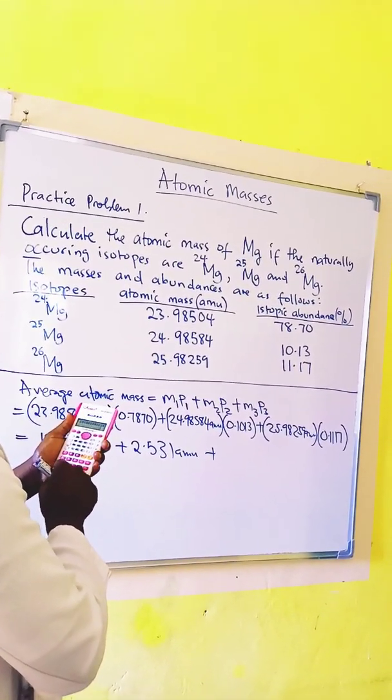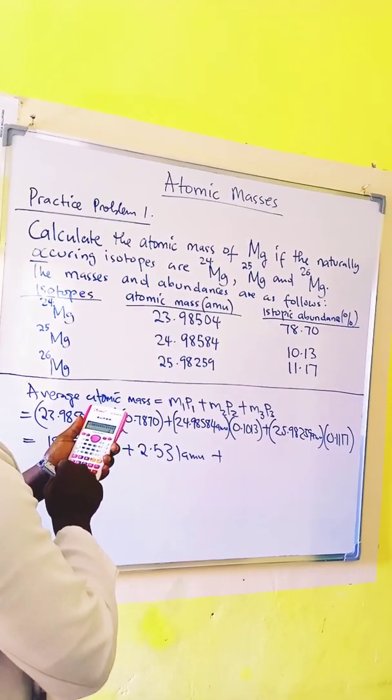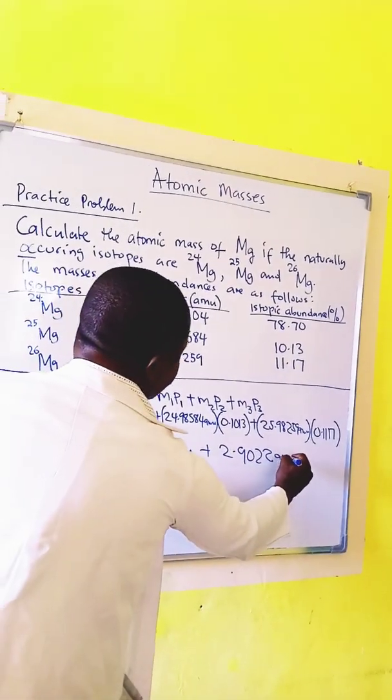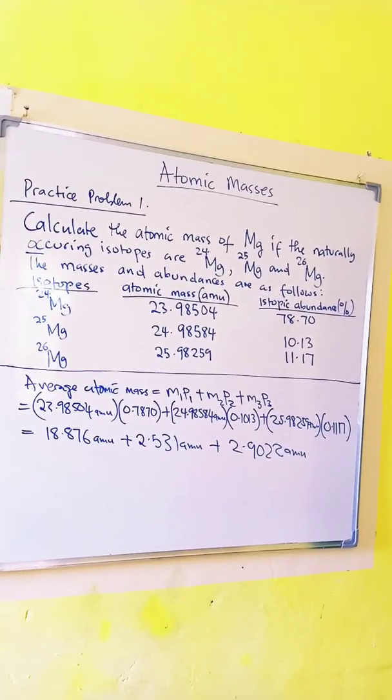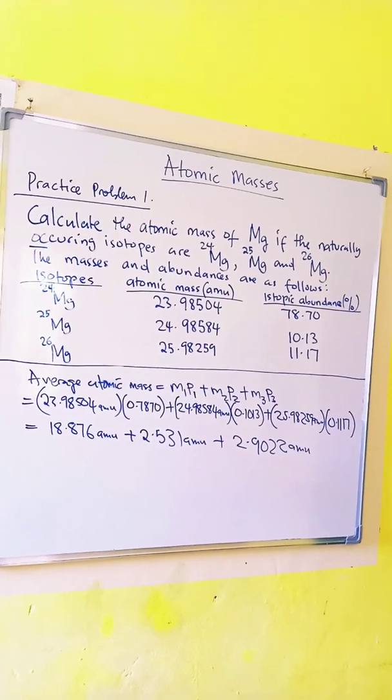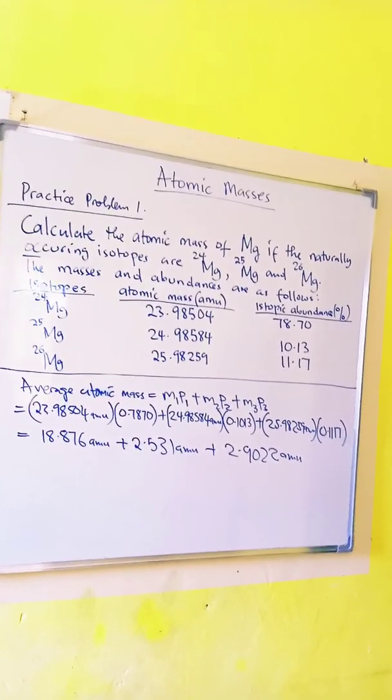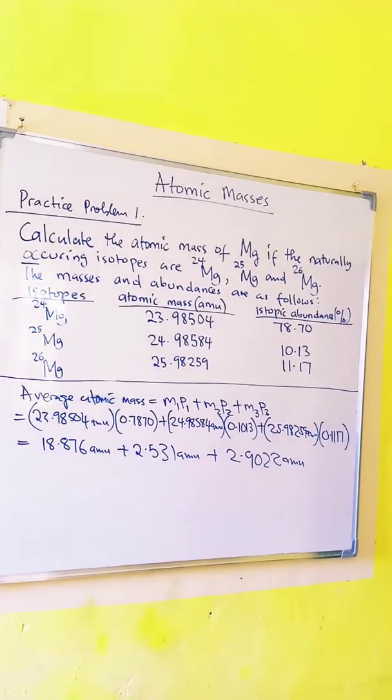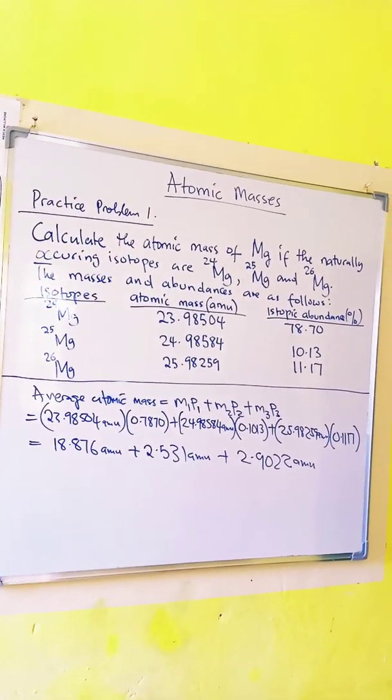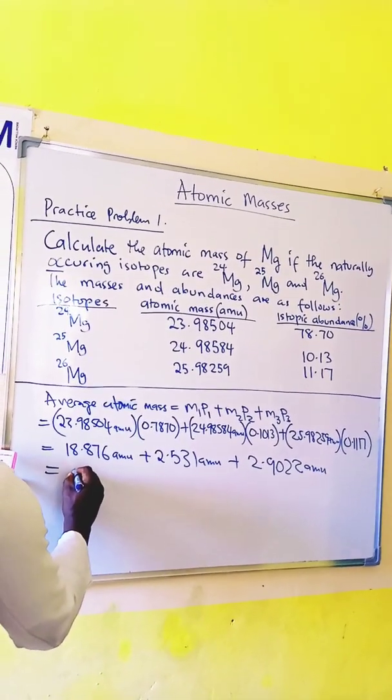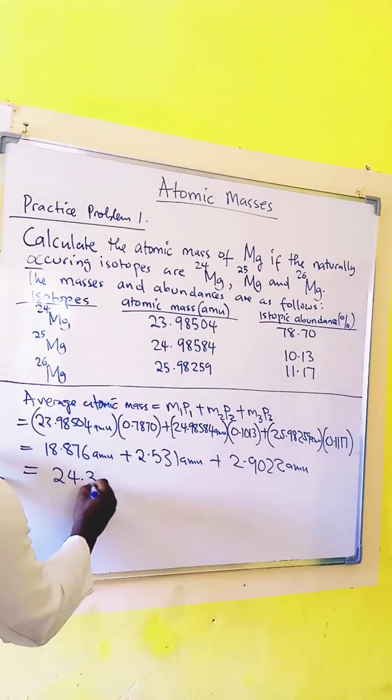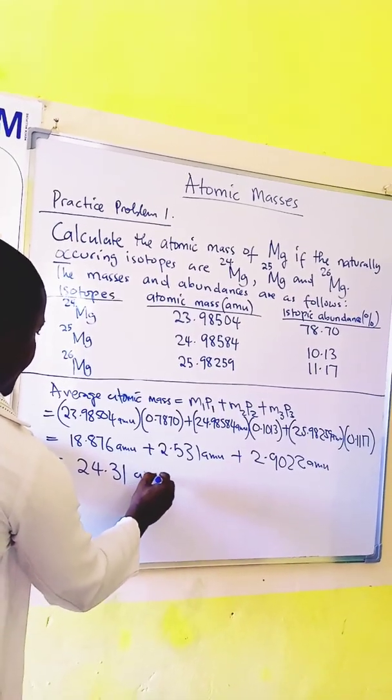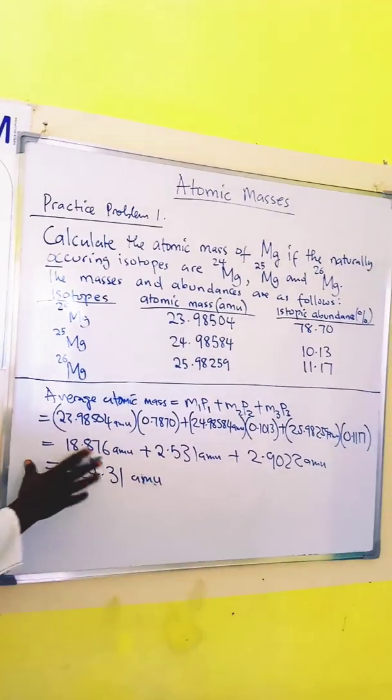25.98259 times 0.1117 gives us 2.9022. Then now we add: 18.876 plus 2.531 plus 2.9022. This gives us 24.31 amu. So this is the average atomic mass of magnesium.